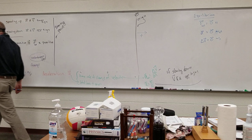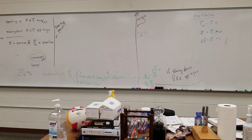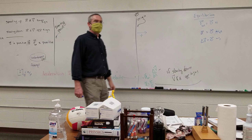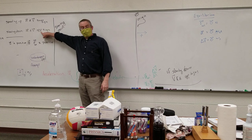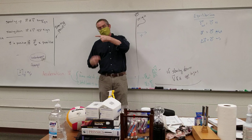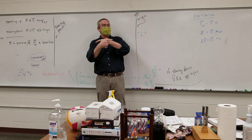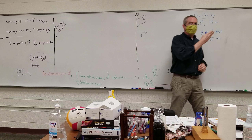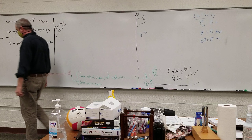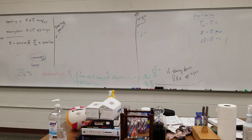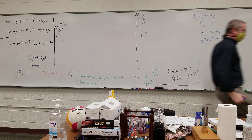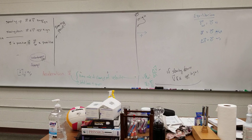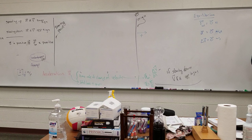Now going in the positive direction: my velocity is positive. Acceleration is positive — I was speeding up. Then at the end, acceleration becomes negative as I slow down. Then I stopped completely. So if you're speeding up, acceleration and velocity are the same sign. If you're slowing down, they're opposite signs.